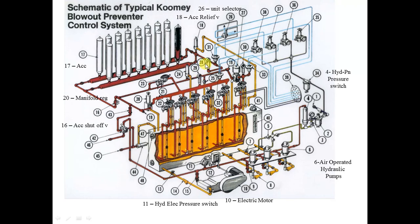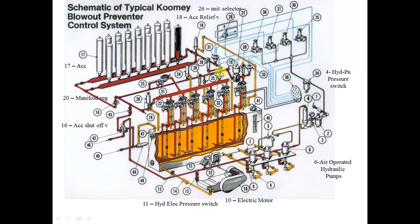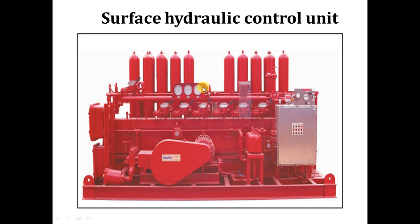Number twenty-eight is the accumulator pressure gauge — reads plus or minus 3000 psi. Number twenty-nine is the manifold pressure gauge — reads plus or minus 1500 psi. Number thirty is the annular pressure gauge — reads from 600 to 1500 psi. These three gauges may be separate or shown together as one instrument cluster on the panel.